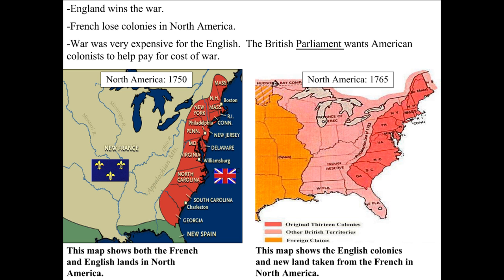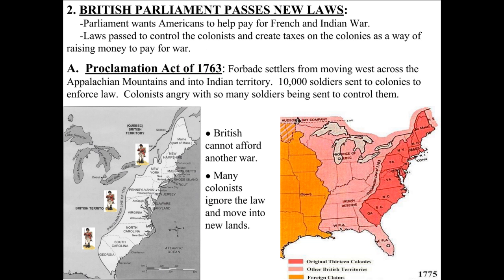British Parliament wanted American colonists to help pay for the cost of the war. On the colonists' side, this was the start of big, serious problems, where they said no way — they were not the ones that should be paying for this. Parliament passed a couple of different laws after the French and Indian War that caused rumblings against England, passing taxes on the colonies to raise money to pay for the war.